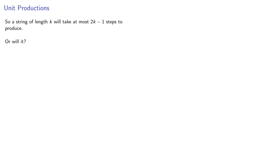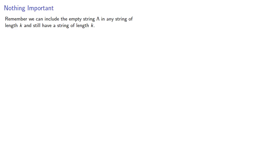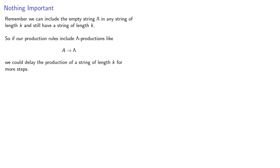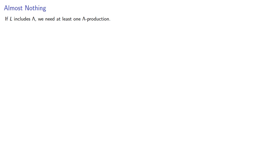Or will it? Remember, we can include the empty string lambda in any string of length k and still have a string of length k. So if our production rules include lambda productions like A produces lambda, we could delay the production of a string of length k for more steps. So we also need to avoid lambda productions. Now, if our language does include lambda itself, we are going to need at least one lambda production. So the question is: could we at least eliminate lambda productions in L minus the empty string? As it turns out, we can.